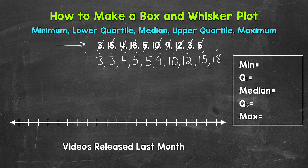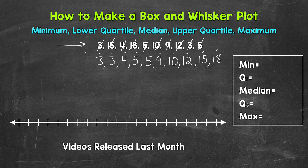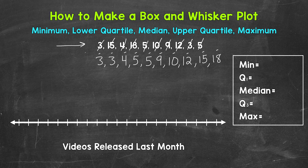Now that we have the data in order from least to greatest, we need to find all of the parts that we will need for the box and whisker plot: the minimum, the first quartile, the median, the third quartile, and the maximum. Let's start with the minimum and maximum, which are just the smallest and largest numbers in value. The minimum is 3, and the maximum is 18.